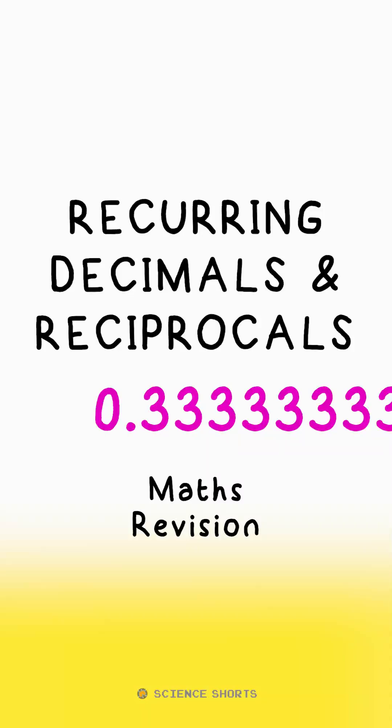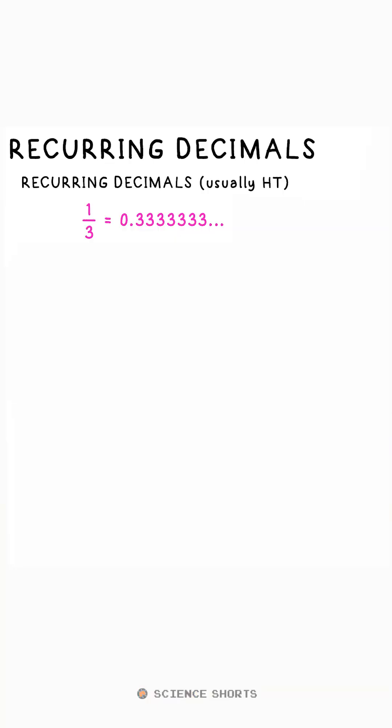If you find one third as a decimal, you'll end up with 0.3, remainder three, and another remainder three, and another and another. These threes will go on forever. This is a recurring decimal.